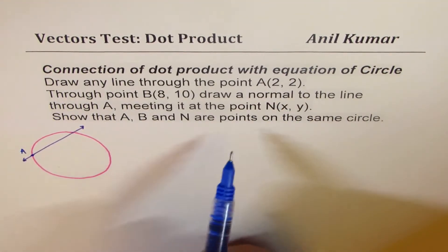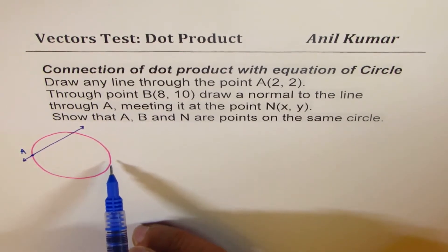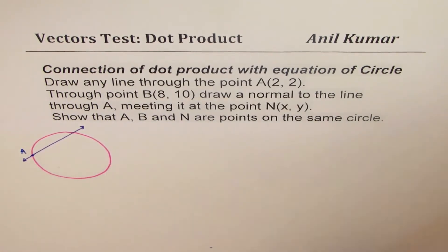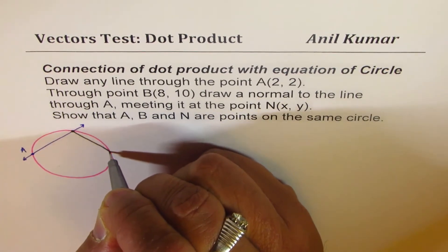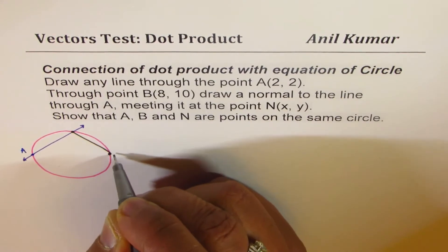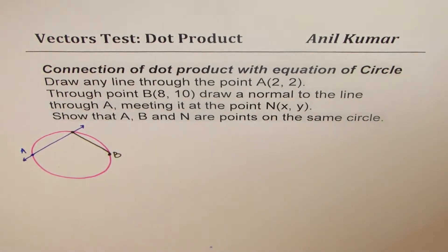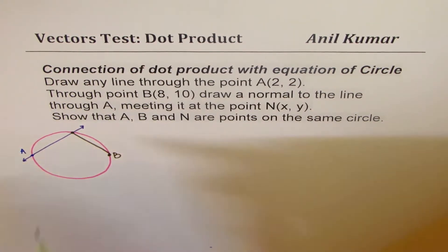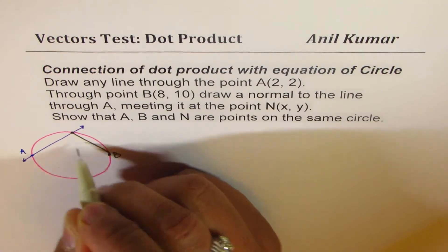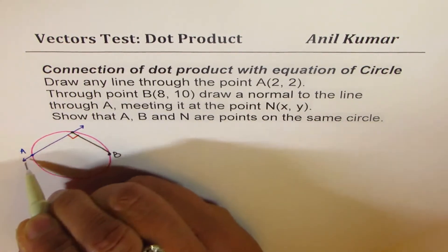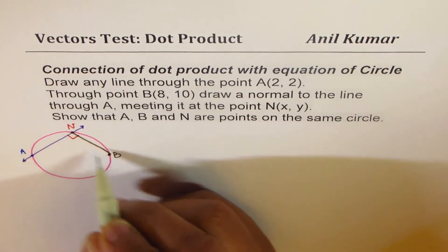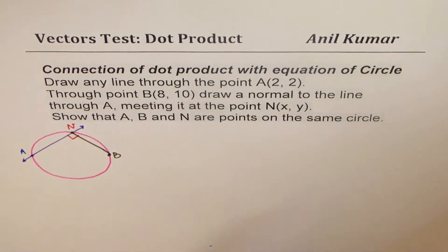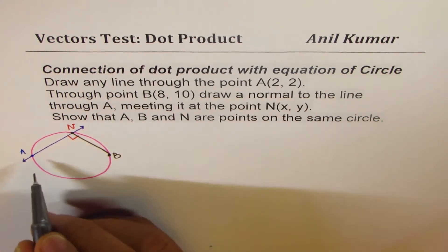Now what I'll do here is take a point B on the circle itself. Let's say this is my point B. And I'm saying that from B I draw a normal to the line through A, that is to say at this point N we have a normal.